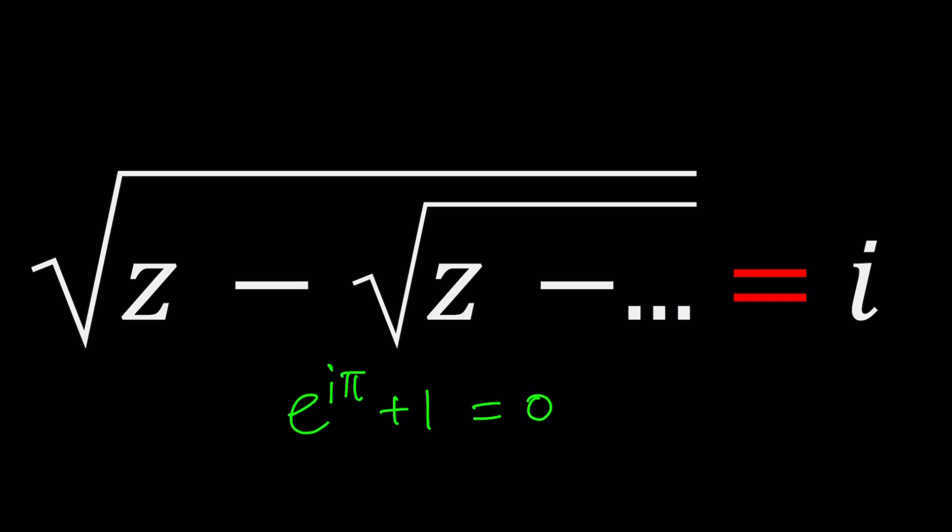Anyways, we're going to go ahead and try to solve for z. How do we solve for z in an equation like this? First of all, there is the question of convergence. Does this converge? Well, I don't know. It looks like it does because the whole thing equals a constant, right?